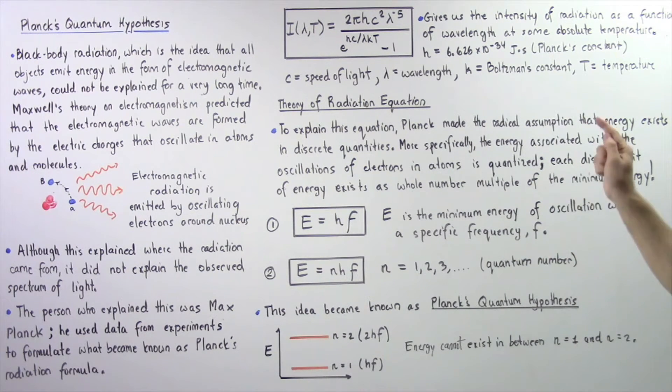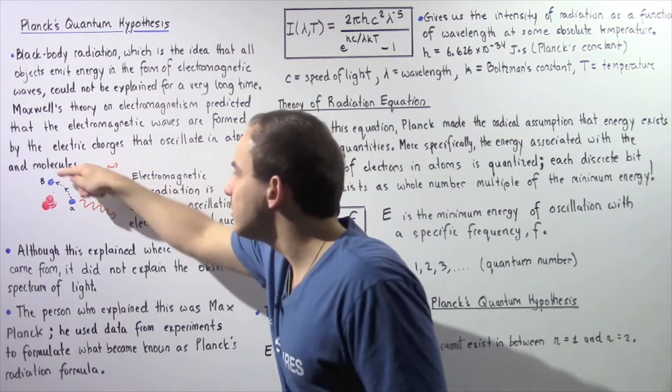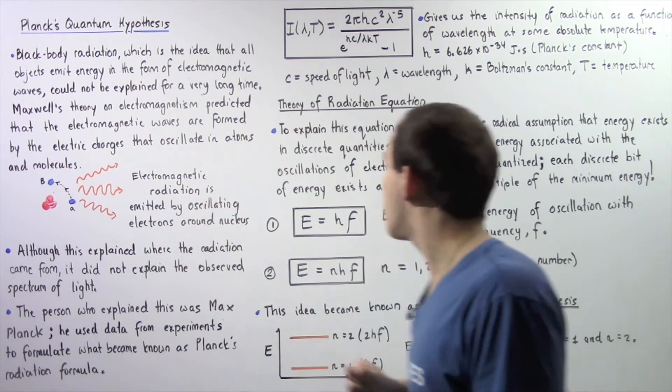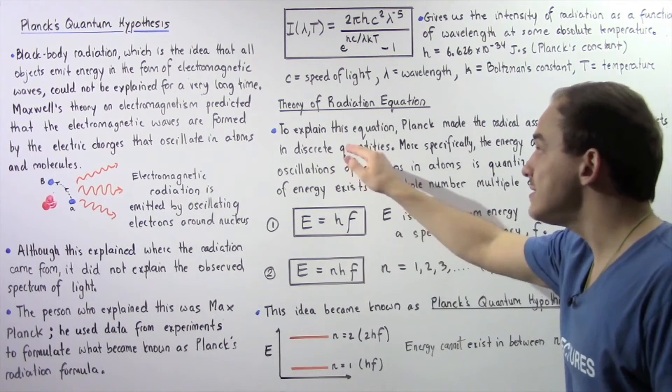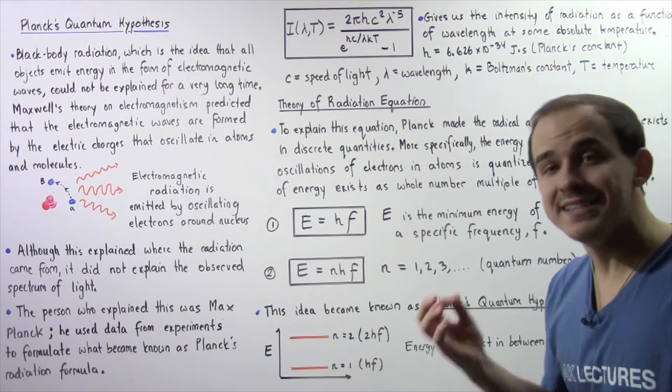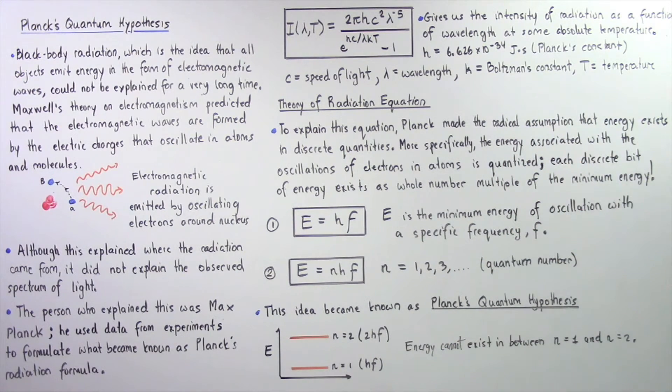It exists in specific discrete quantities. It is not continuous. So that means that each discrete quantity of energy exists as a whole number, as a whole number multiple of the minimum energy.